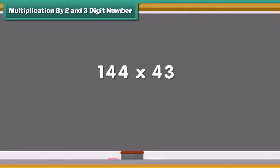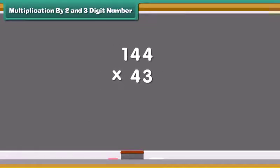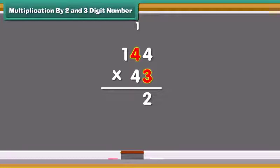Let us multiply 144 by 43. Start multiplication from 1's place. 3 times 4 are 12. Write 2 in the 1's place and carry the 1 forward to the 10's place. Multiply 3 from the number on 10's place. That is, 4 equals 12.